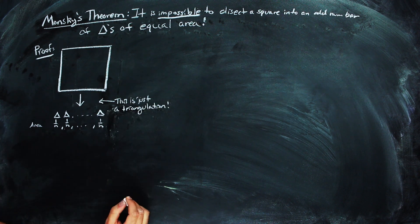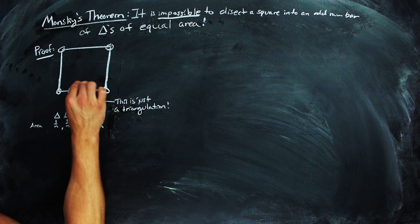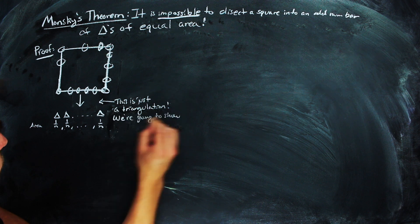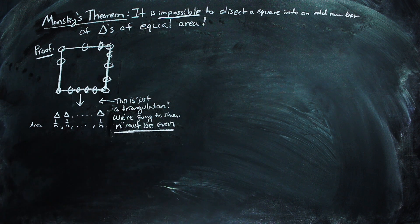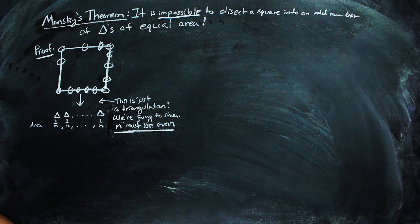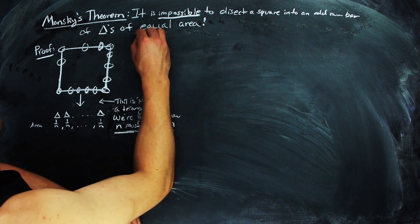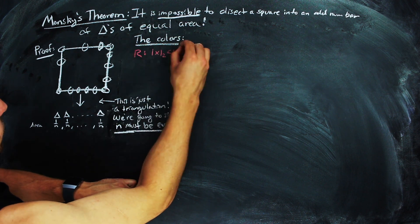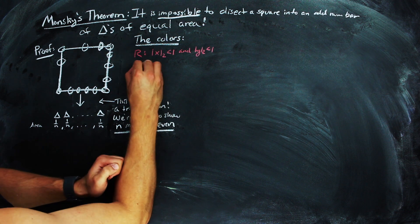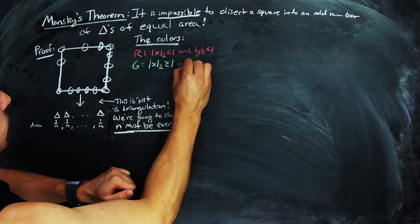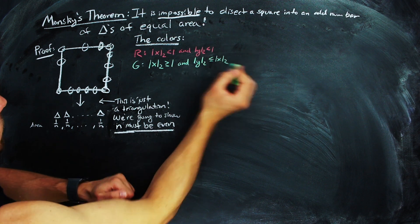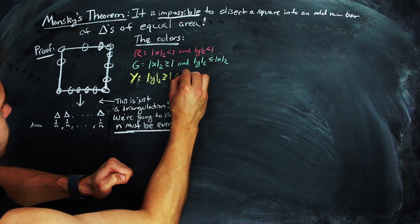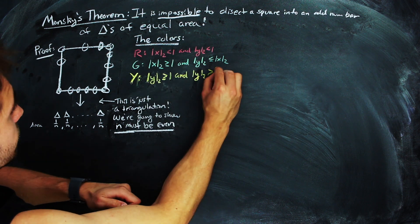The proof starts off by taking the unit square and breaking it up into n equal area triangles, which is just a triangulation. We're going to show that n must be even, so we're going to go ahead and define some colors for our triangulation based on the two-adic norm. A vertex is red if the two-adic norm of x and the two-adic norm of y are both strictly less than 1. A vertex is green if the two-adic norm of x is greater than 1 and the two-adic norm of y is less than or equal to the two-adic norm of x, and a vertex is yellow if the two-adic norm of y is greater than 1 and the two-adic norm of x is strictly less than the two-adic norm of y.